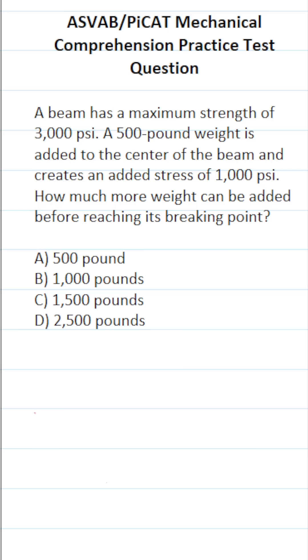As it happens, this one's actually fairly easy to solve. We know that when we add 500 pounds to the beam, it creates 1,000 PSI of pressure on the beam.